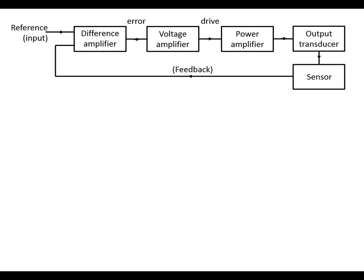We've got a block diagram of a proportional control system where we've got a difference amplifier which is going to be comparing the input from the reference and the feedback from the sensor. It's going to provide what we call the error signal. This goes into a voltage amplifier which provides the drive signal to the power amplifier, which provides the power for the output transducer. And then we've got the sensor, which is going to be sensing the conditions of the output.